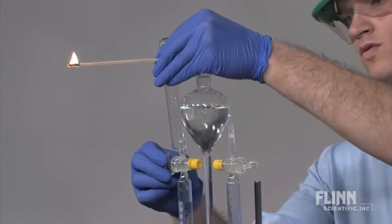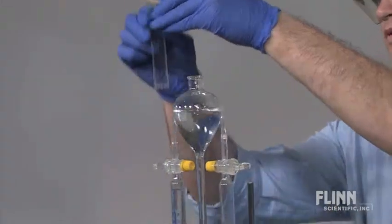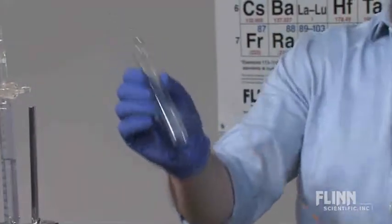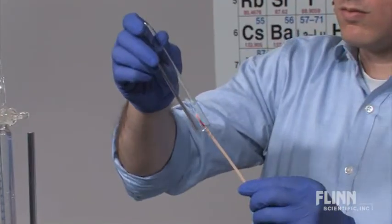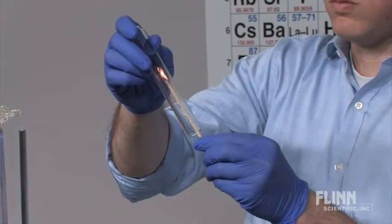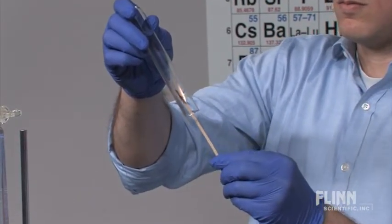Prove that you have just split water by inserting a burning splint into the hydrogen test tube. Insert a glowing splint into the oxygen test tube and the nearly extinguished flame will spark back to life as the oxygen gas fuels its combustion.